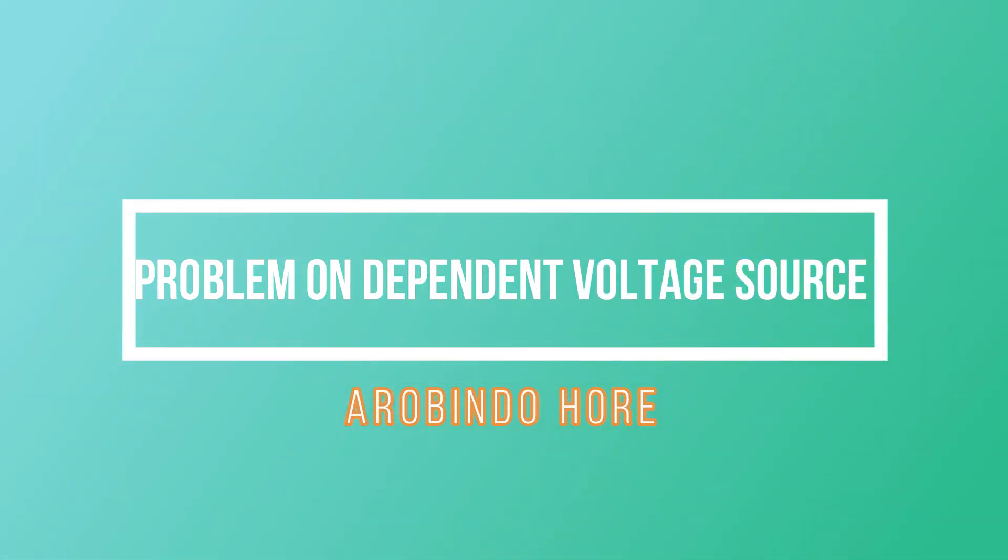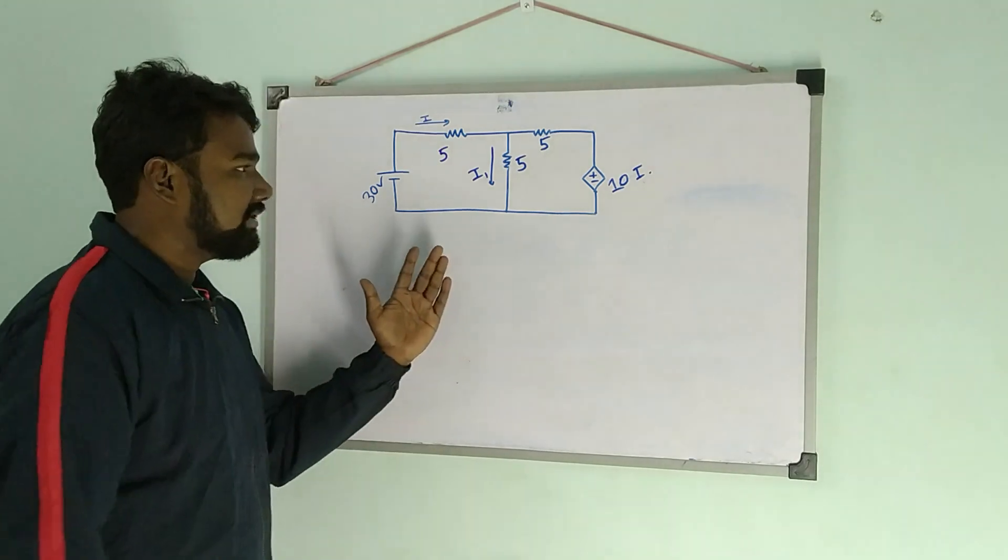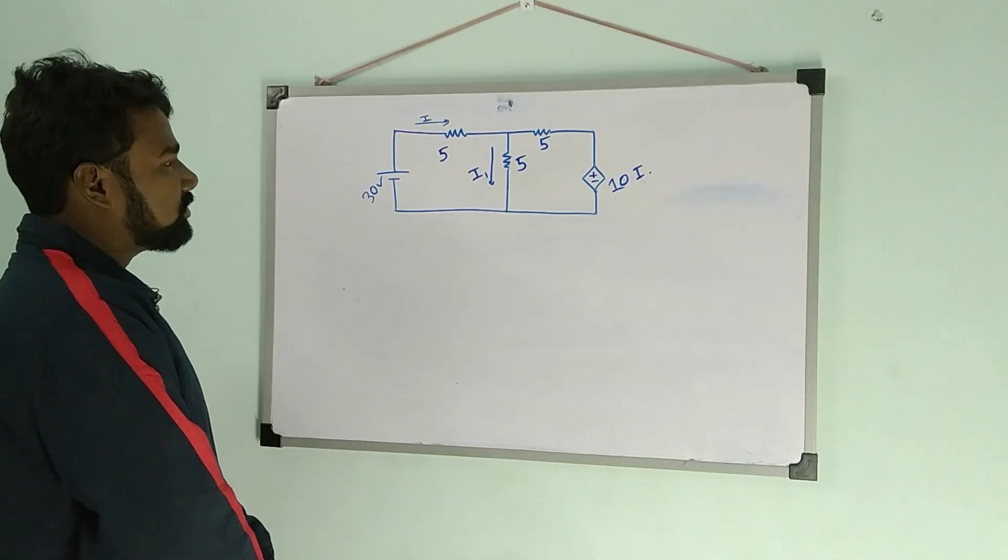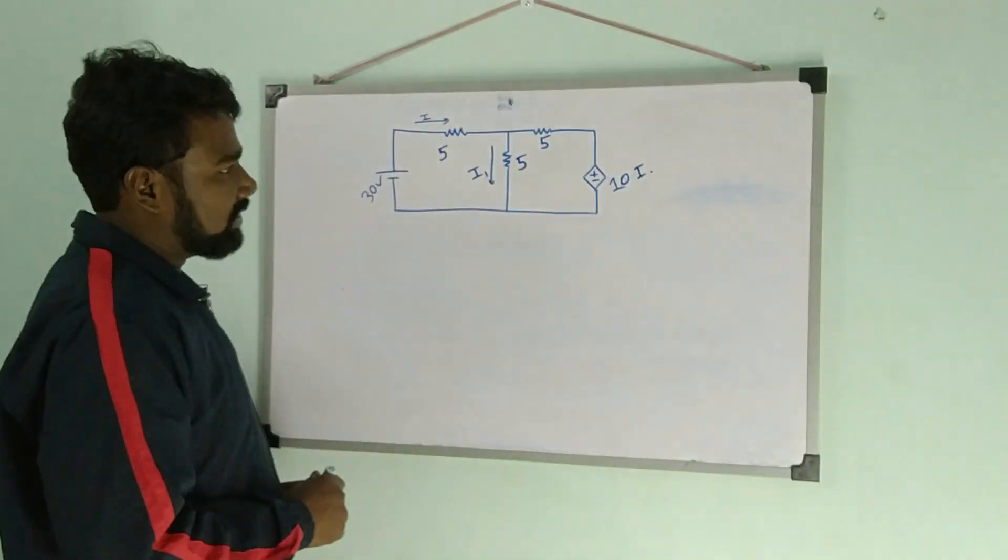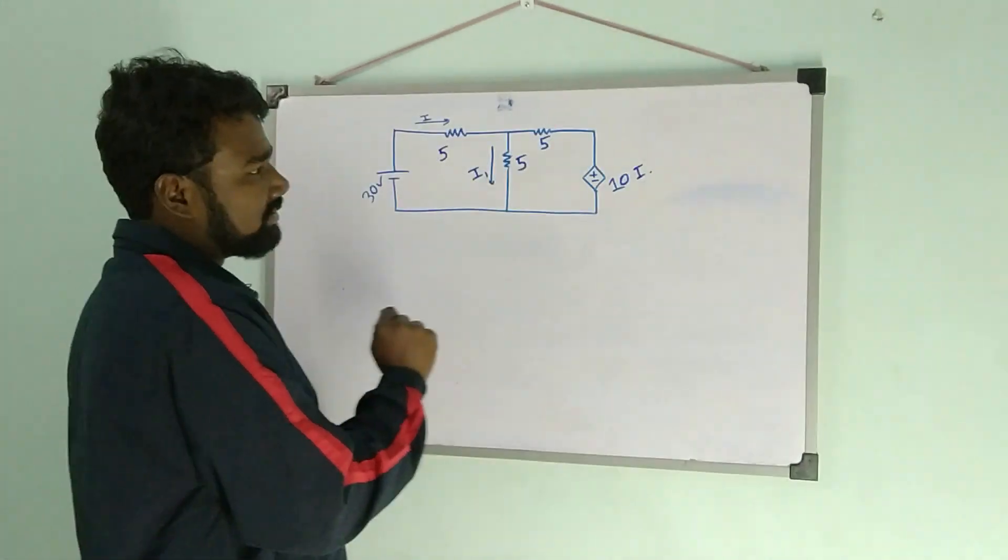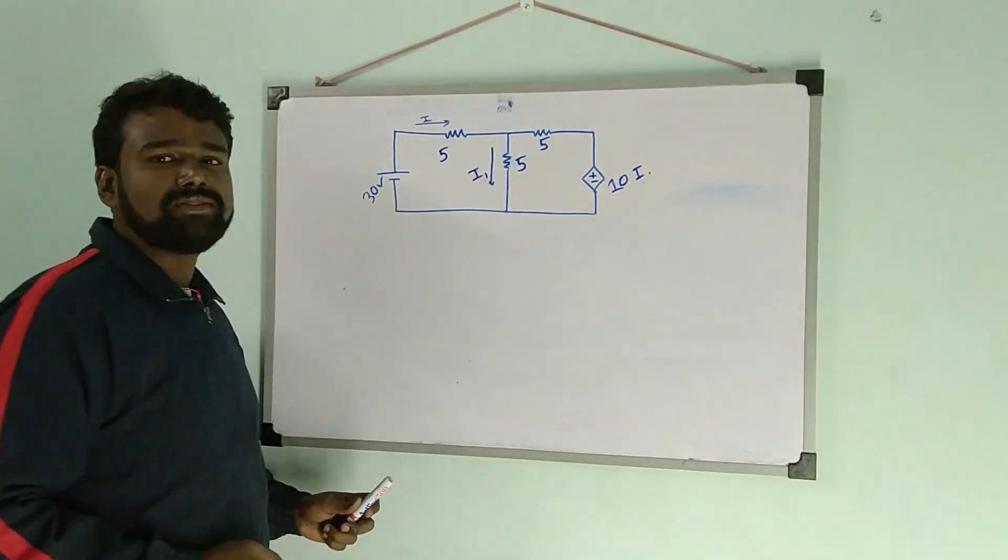Welcome to my YouTube channel. Here we see another example of the top three questions. In this question, you have to find the value of i1, but here is a small twist: this is a dependent voltage source.